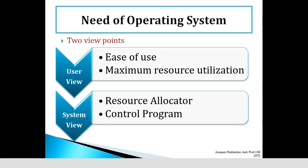Control programs are found in many operating systems like Windows. If any error occurs at runtime, then execution of that particular program or process will be interrupted. It shows an error message and some instructions to fix the problem.